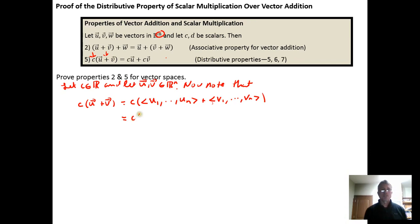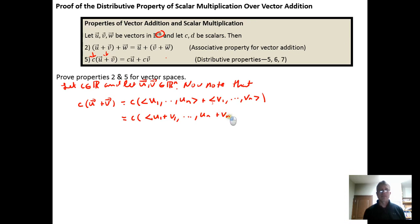So we get c times the sum of the two vectors inside the parenthesis, doing component-wise addition: (u₁ + v₁, ..., uₙ + vₙ). So we get c times the vector with components (u₁ + v₁, ..., uₙ + vₙ).